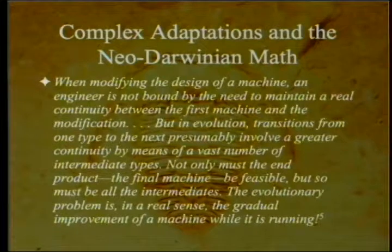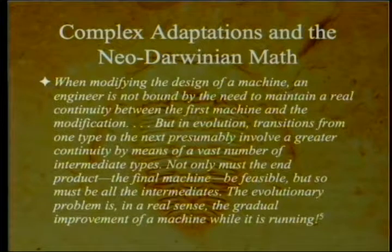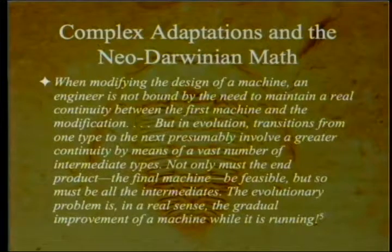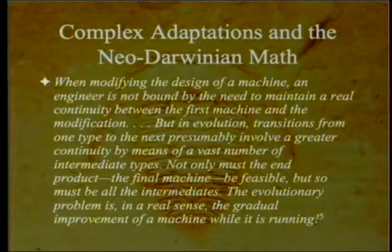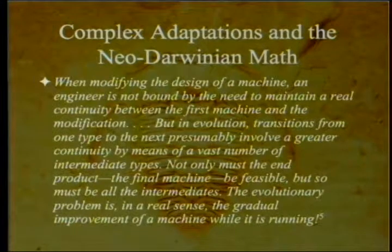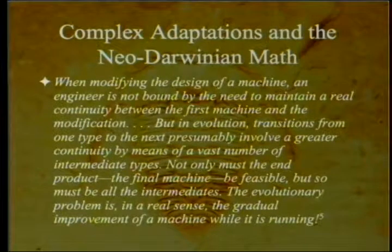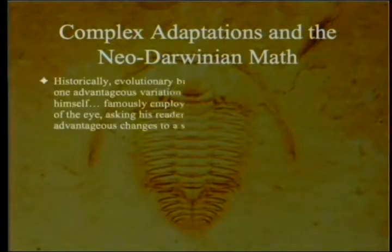Any system that depends for its function on the coordinated action of many parts could not be changed gradually without losing function. In the neo-Darwinian scheme, natural selection acts to preserve only functional advantages; changes that result in death or reduced function will not be preserved. In 1975, Frazetta wrote a minor classic entitled Complex Adaptations in Evolving Populations. He wrote: when modifying the design of a machine, an engineer is not bound by the need to maintain continuity, but in evolution, transitions presumably involve a vast number of intermediate types — the gradual improvement of a machine while it is running.